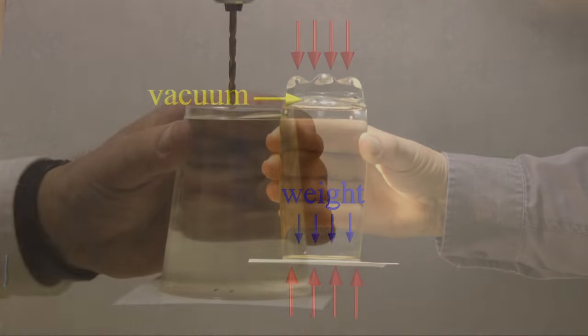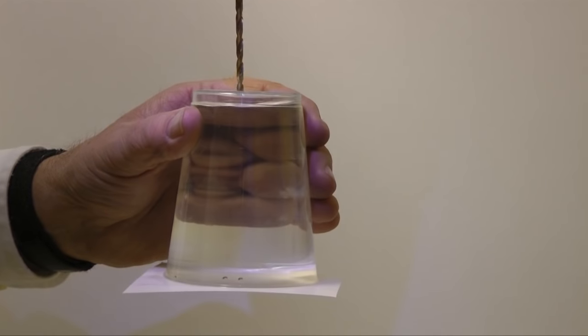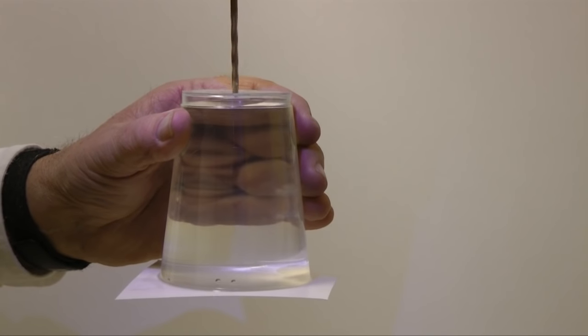If we drilled a hole in the top of the glass, air pressure would push on the top of the water. The water would fall from the glass.